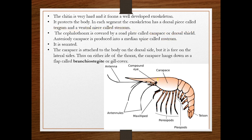The carapace is attached on the dorsal side. On the lateral side, the carapace extends downward to cover the gills. This lateral extension is called the gill cover or branchiostegite.